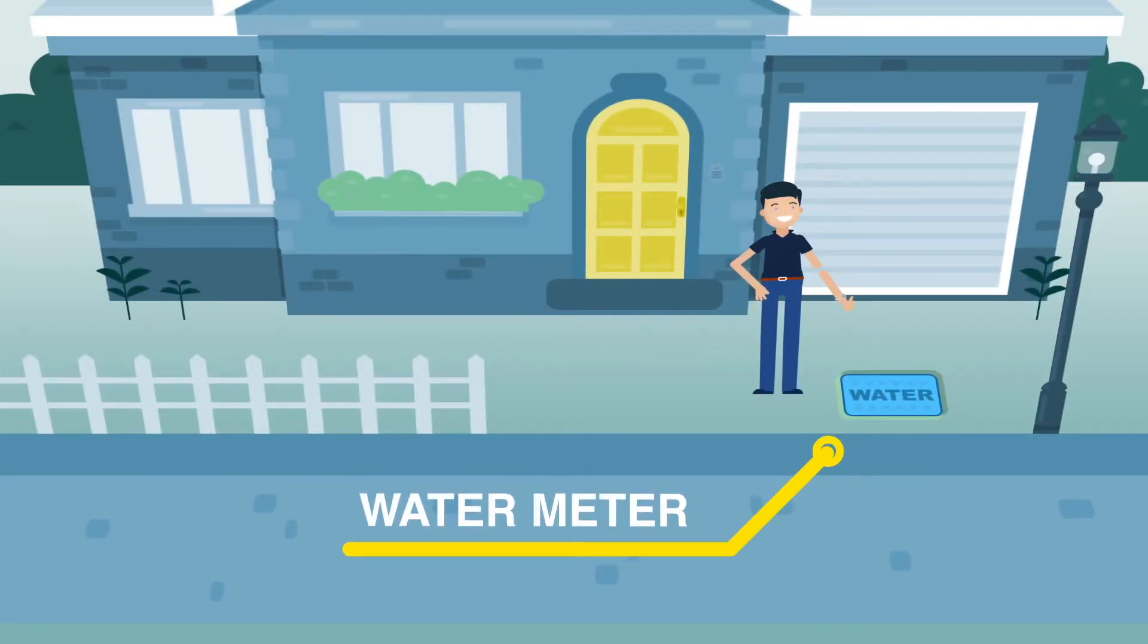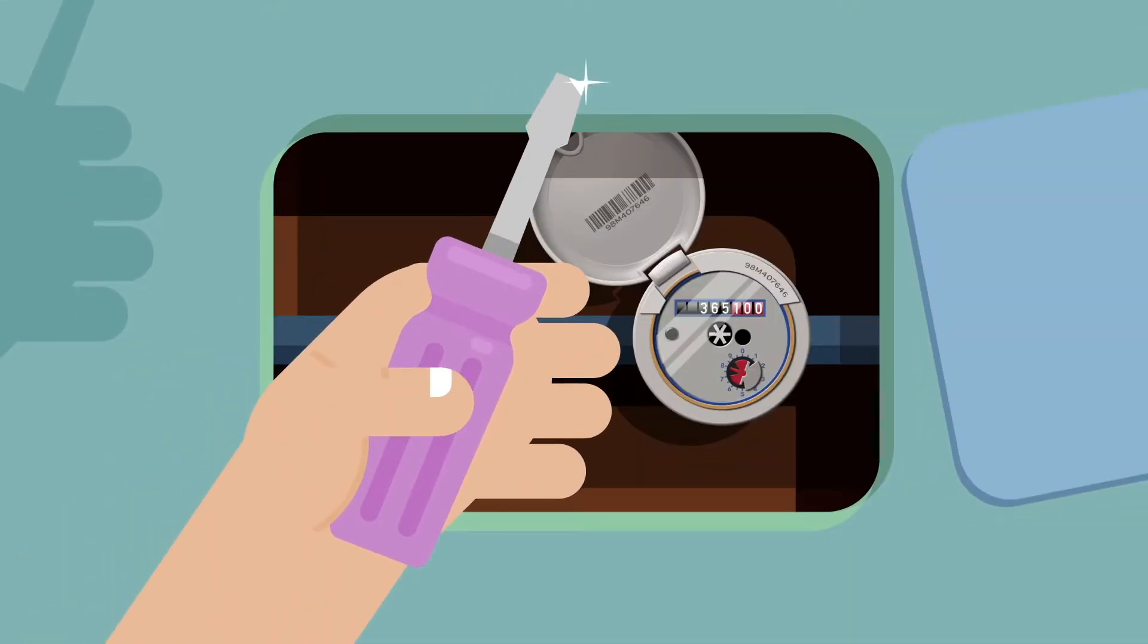First find your water meter. Look for the blue box on the ground near your property boundary and flip the lid using a flathead screwdriver.